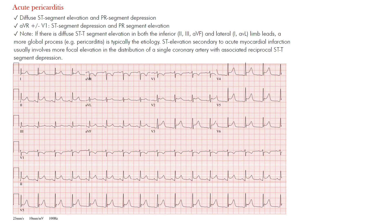Acute pericarditis presents with pleuritic chest pain that's often positional and may come on after a virus. Viral or idiopathic causes are the most common. The EKG can be quite helpful, and we want to know what changes to expect and how to differentiate this from an ST elevation MI. The first key finding is diffuse ST segment elevation.